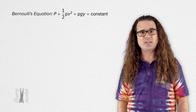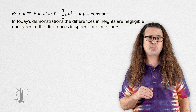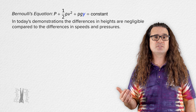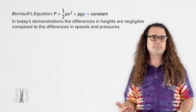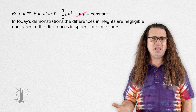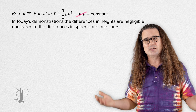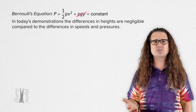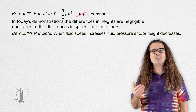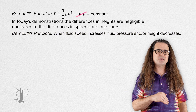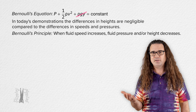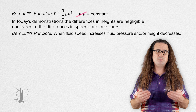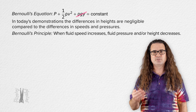In all of our demonstrations today, we are going to assume the differences in heights are negligible compared to the differences in speeds and pressures. In other words, the variable y in the equation is comparatively very small and that whole term can be neglected. Air is not an ideal fluid — it is certainly compressible — so Bernoulli's equation is not strictly correct in these demonstrations. However, Bernoulli's principle, which states that an increase in speed corresponds to a decrease in pressure, is still correct.